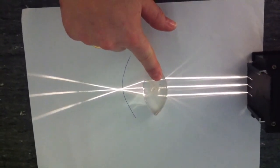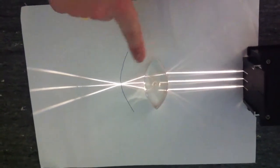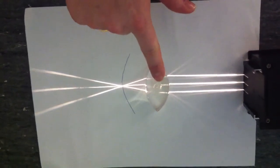Whoops. There we go. This lens, this nice convex lens, represents the lens in your eye.